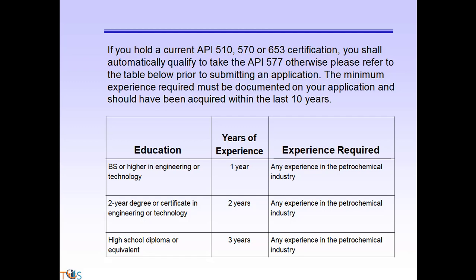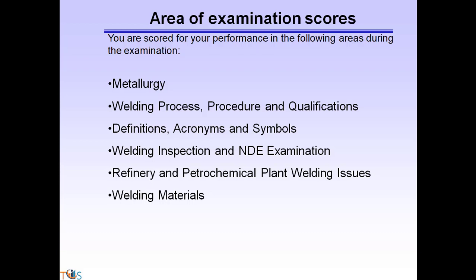If you hold a current API 510, 570, or 653 certification, you shall automatically qualify to take the API 577. Otherwise, please refer to the requirements table before submitting your application. The minimum experience required must be documented and accrued within the last 10 years. A bachelor's degree in engineering requires one year of experience; an associate degree or two-year degree in engineering or technology requires two years; and a high school diploma requires two years in the petrochemical industry.